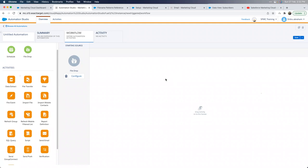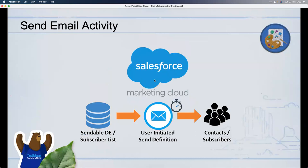The next activity is Send Email. It's very straightforward — if you just want to schedule sending an email to a set of people, like a monthly newsletter to opted-in subscribers, you can use Send Email Activity in Automation Studio. You don't need to create a Journey for that. There are two options for how you can send.